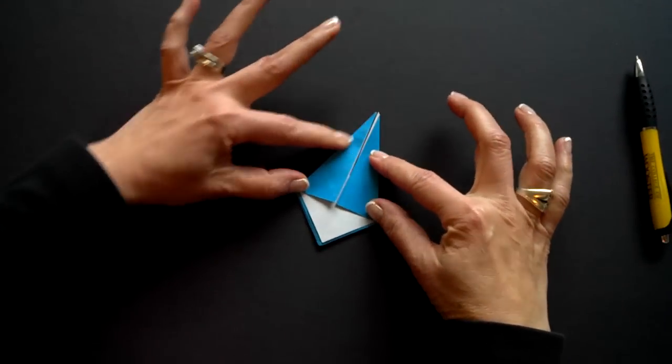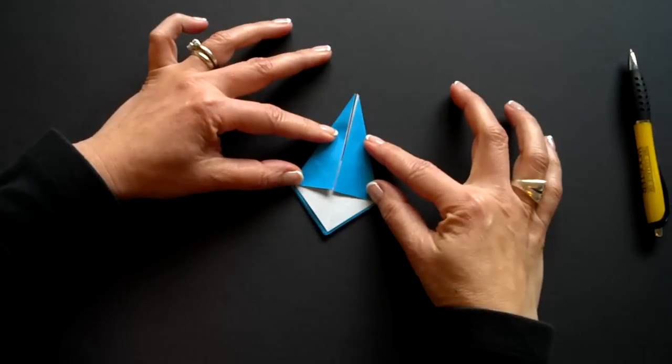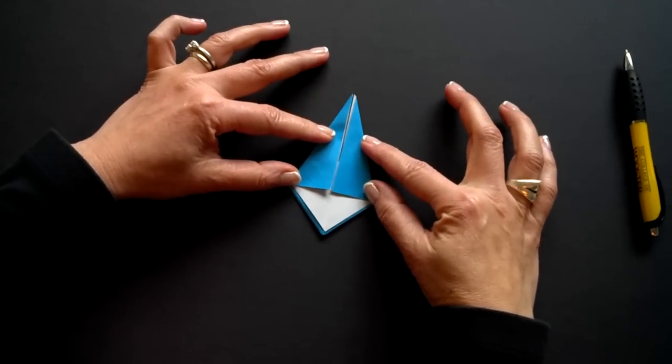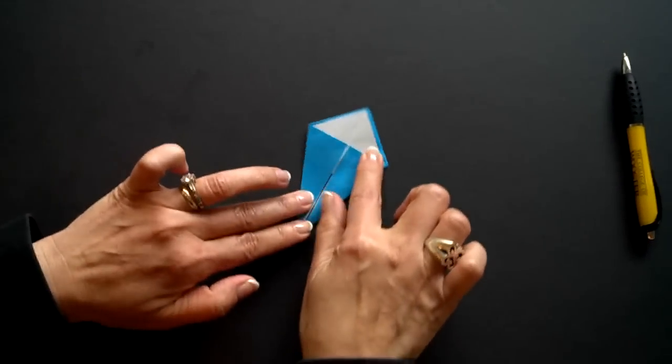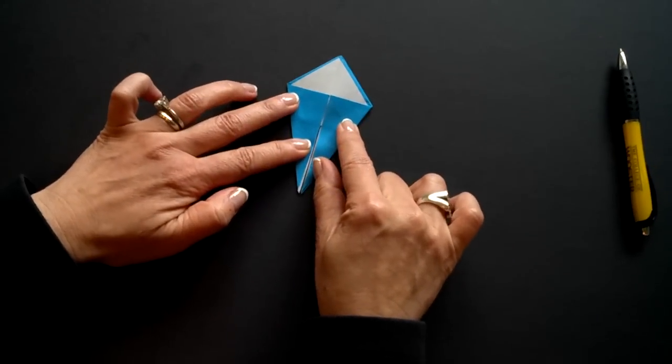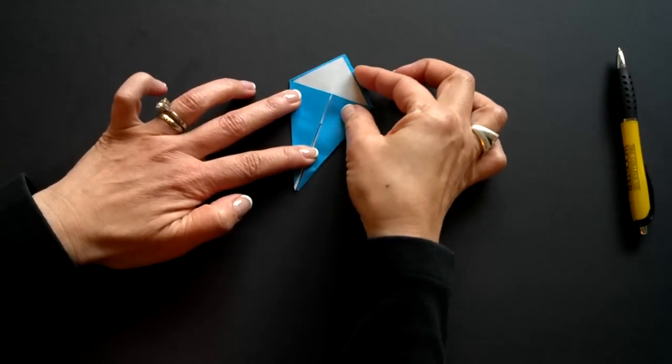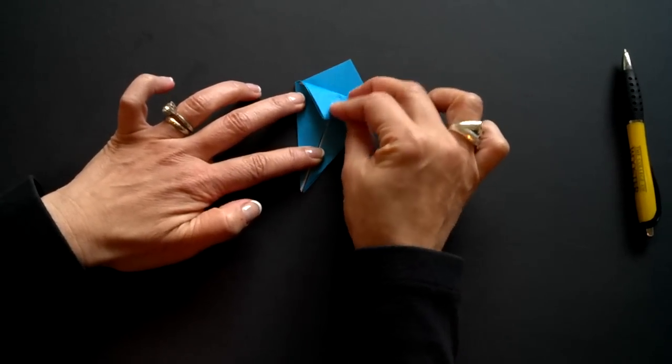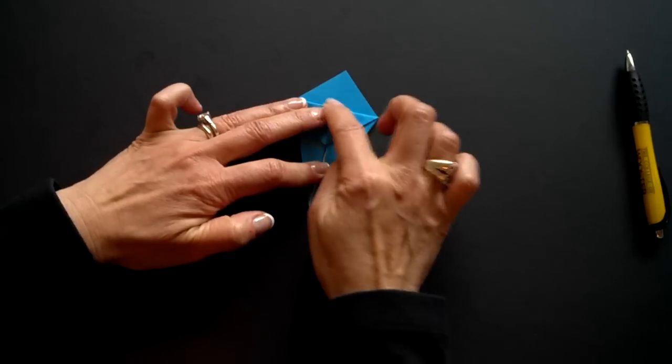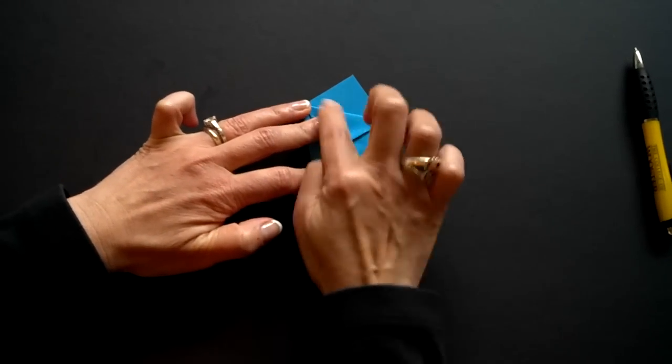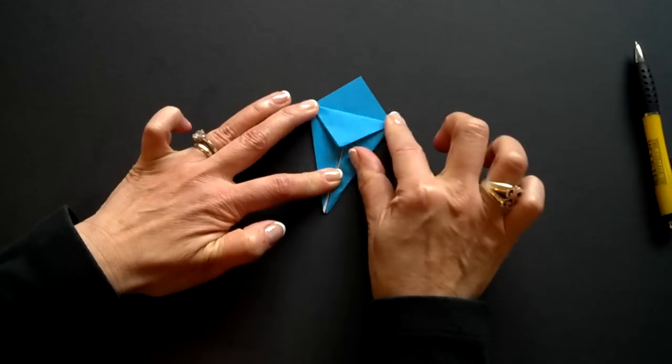So now we have what looks like a kite shape. I like to turn it around one more time like this. And make a crease. Because I need this important fold line here for this next step.